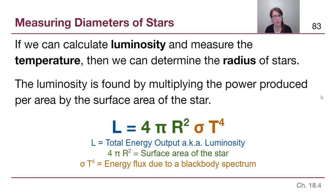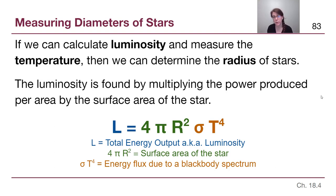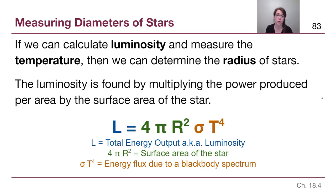If we can measure the temperature of the star — even easier for us, because the color of a star tells us something about the temperature, and the peak wavelength of the blackbody curve tells us something about the temperature. If we have luminosity and temperature, then we can determine the radius of stars. Measuring the radius is quite difficult, but this equation gives us a way. The luminosity of a star is found by multiplying sigma T to the fourth — the blackbody radiation power per area — by the overall surface area of the star, 4 pi r squared.